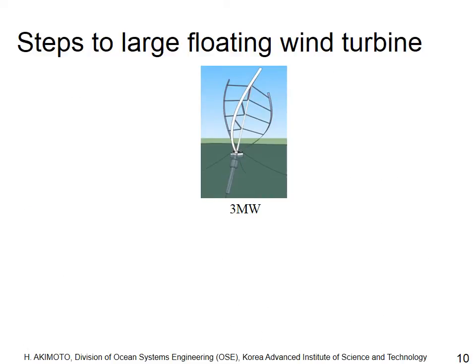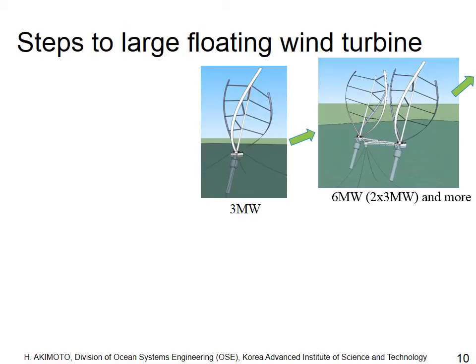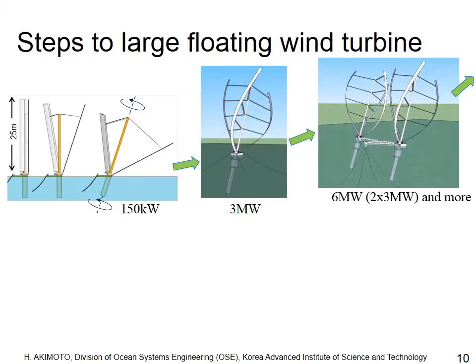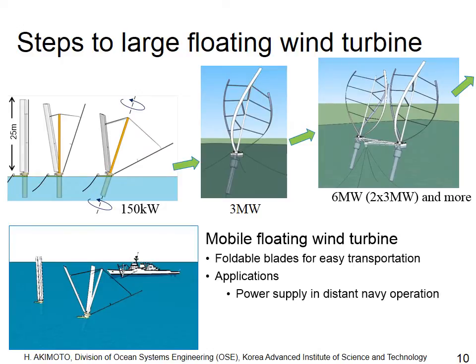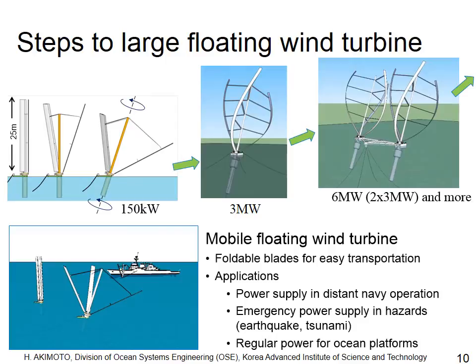Because the weight of the rotor is supported by buoyancy, scaling up this design will be easy. By connecting two counter-rotating turbines or increasing the size of each turbine, we can build a huge offshore floating wind turbine. The small design is also useful — it can serve as a mobile floating wind turbine with foldable blades like an umbrella. Possible applications include power supply for naval fleets in distant operations, emergency power supply in areas affected by earthquake or tsunami, and regular power supply for ocean platforms.